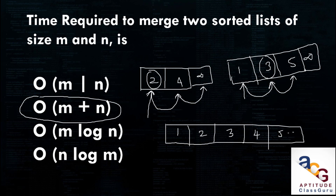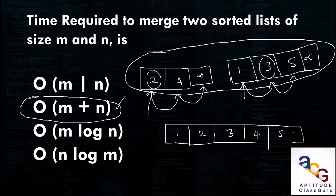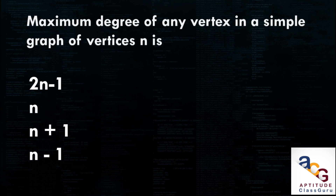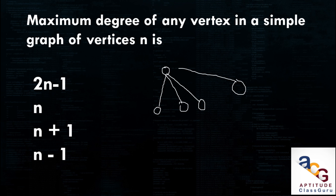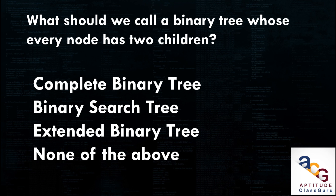The time required to merge two sorted lists is O(m + n). Next: what is the maximum degree of any vertex in a simple graph with n vertices? From any one node you can connect to at most n-1 other nodes. So the maximum degree is n - 1.